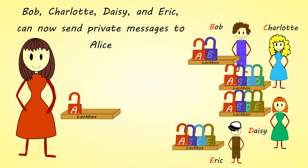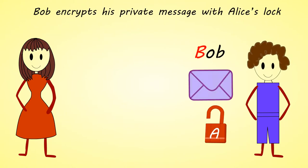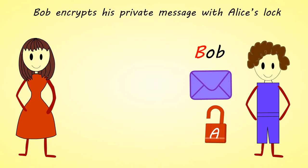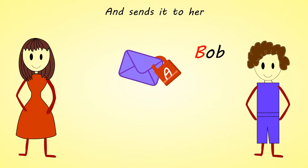Bob, Charlotte, Daisy, and Eric can now send private messages to Alice. Bob encrypts his private message with Alice's lock and sends it to her.